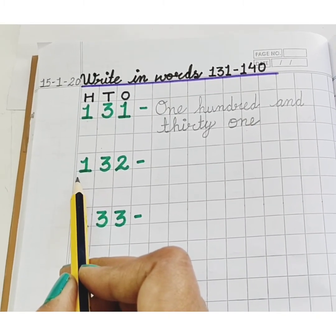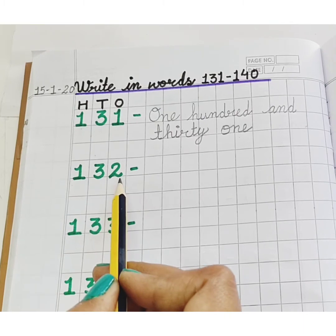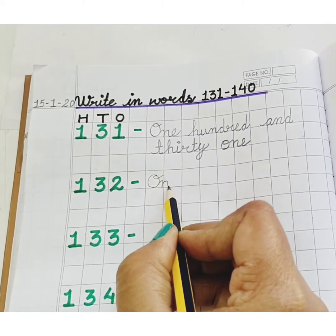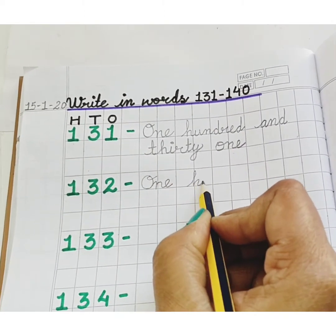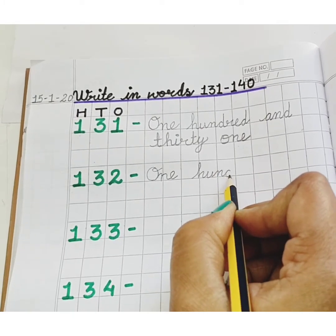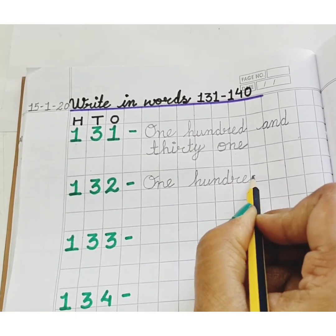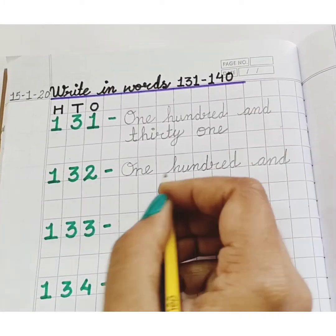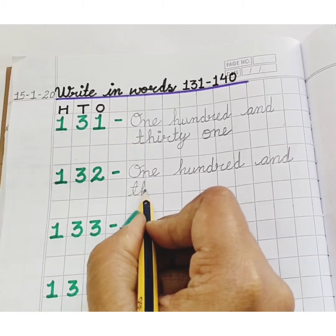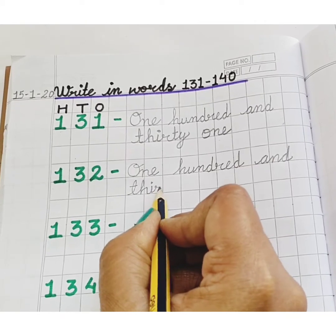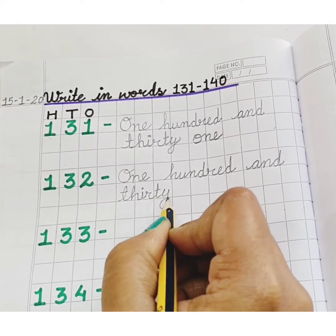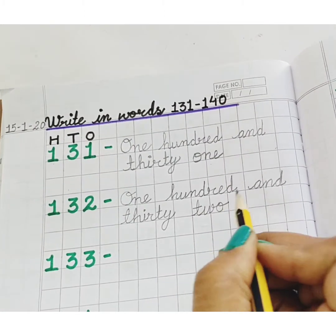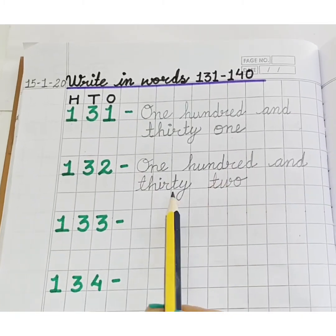Next number is one hundred and thirty-two. O, N, E — 1. H, U, N, D, R, E, D — 100. A, N, D — and T, H, I, R, T, Y — 30. T, W, O — 2. 132.